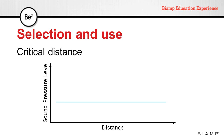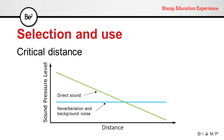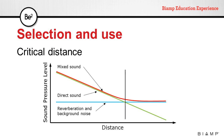In a room, we're going to have reverberation and background noise, and the level of these will be roughly the same regardless of distance. When somebody talks in a room, direct sound will diminish in level as we get farther from the source. At any distance, the resulting signal is the mix between direct sound and reverberation. At some point — called the critical distance — both signals have the same level. Beyond that point, direct sound is masked by reverberation and background noise.